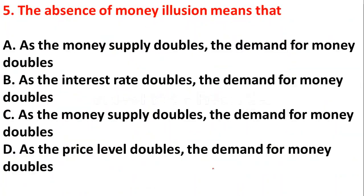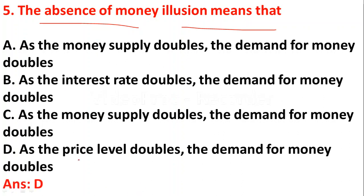The next question: the absence of money illusion means that — option A: as the money supply doubles, demand for money doubles; option B: as the interest rate doubles, demand for money doubles; option C: as the money supply doubles, demand for money doubles; option D: as the price level doubles, demand for money also doubles. Money illusion is related to price level, so option D is the correct answer.